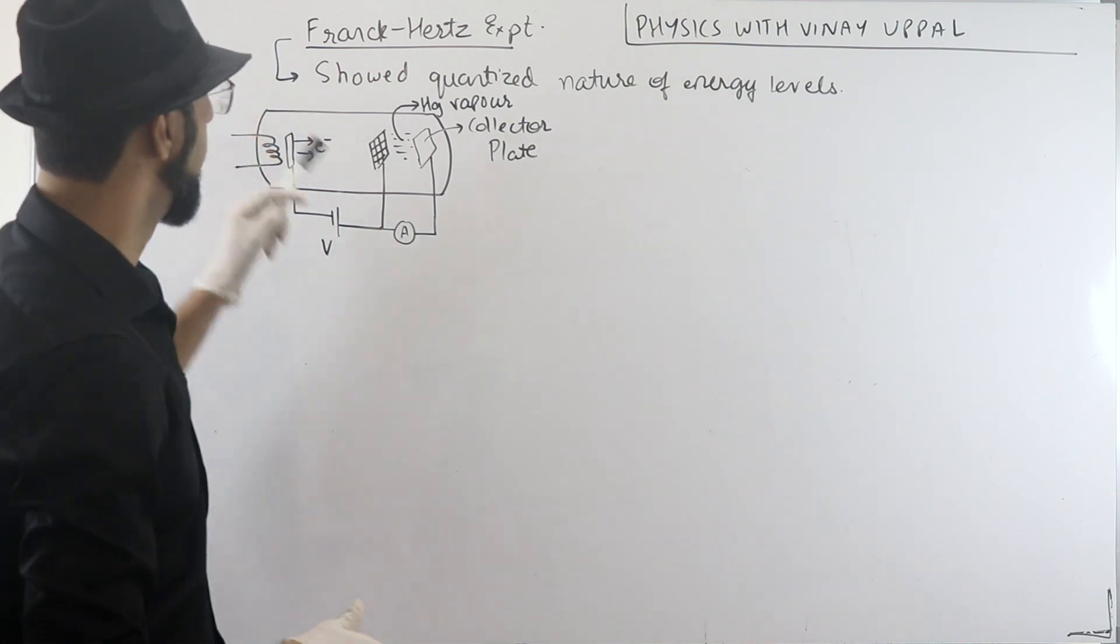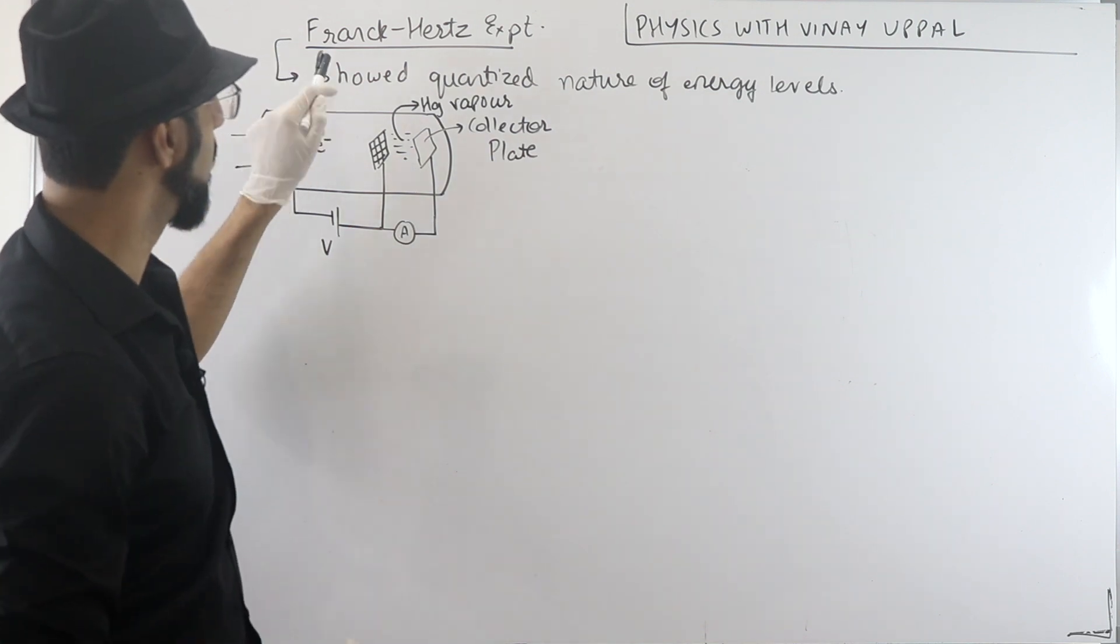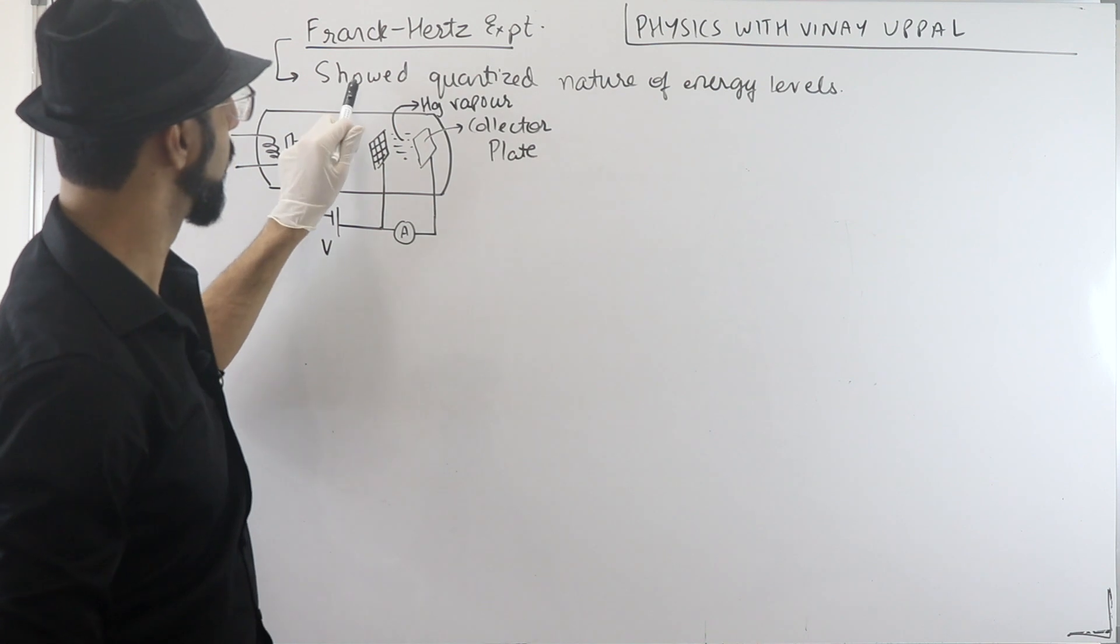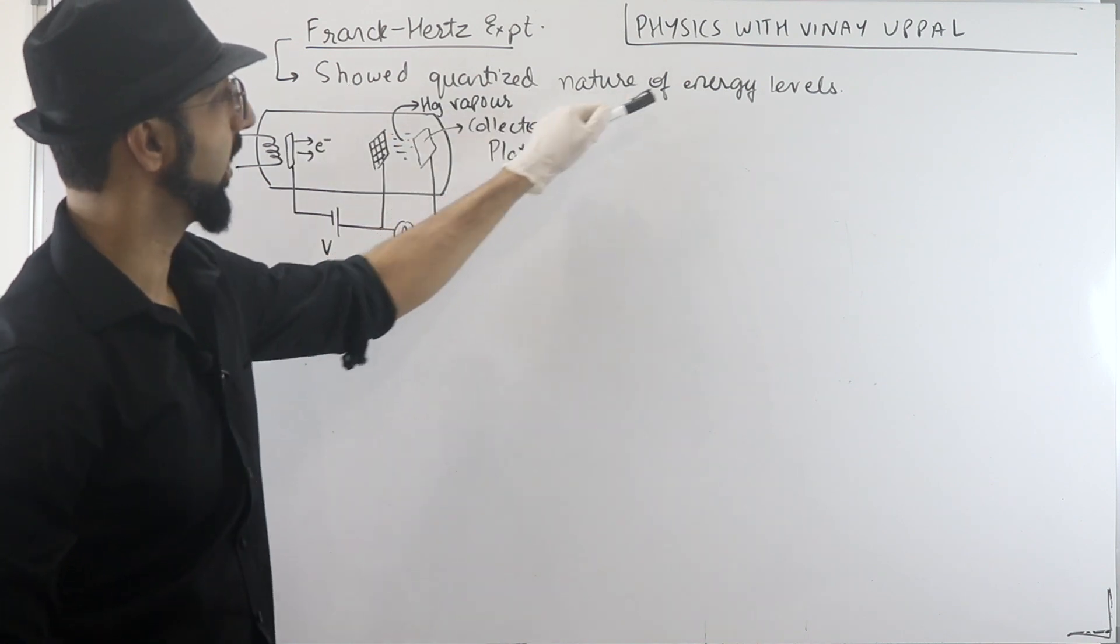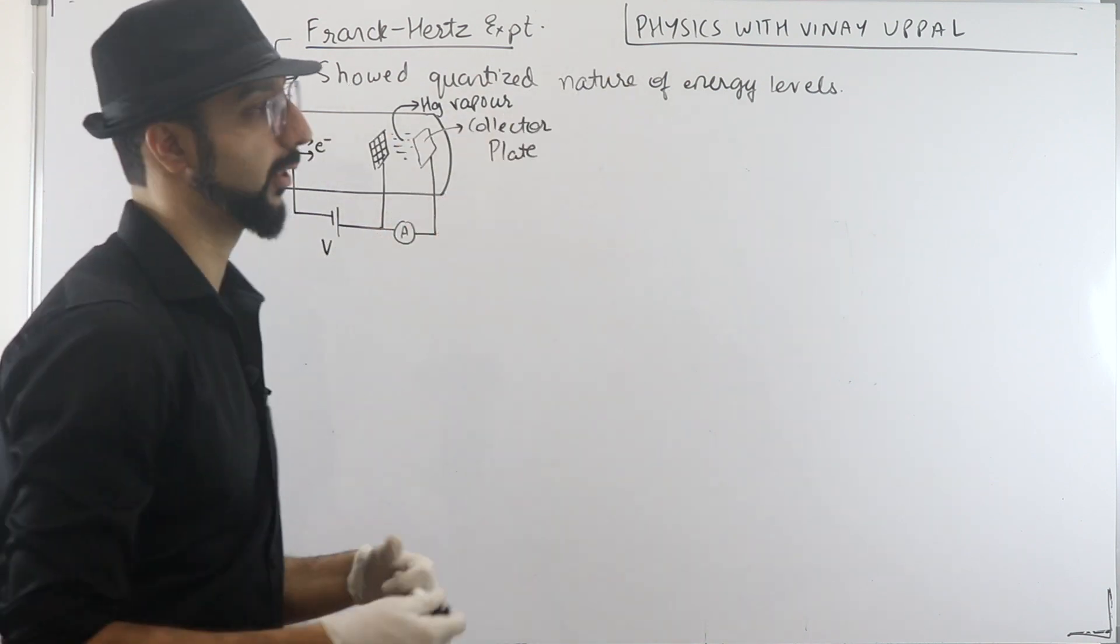Let's look at the Franck-Hertz experiment. So Franck and Hertz, they both were the first ones to show that the energy levels are actually quantized in nature. So how did that happen?